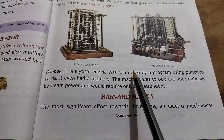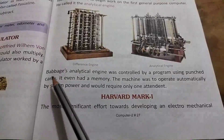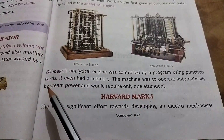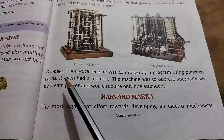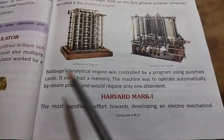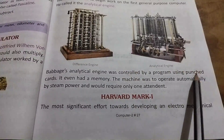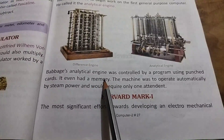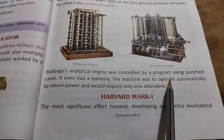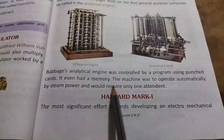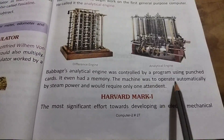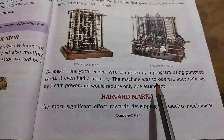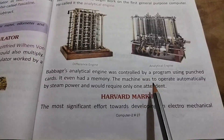Babbage's Analytical Engine was controlled by a program using punched cards. It even had a memory. The machine was to operate automatically by steam power and would require only one attendant to do the work.